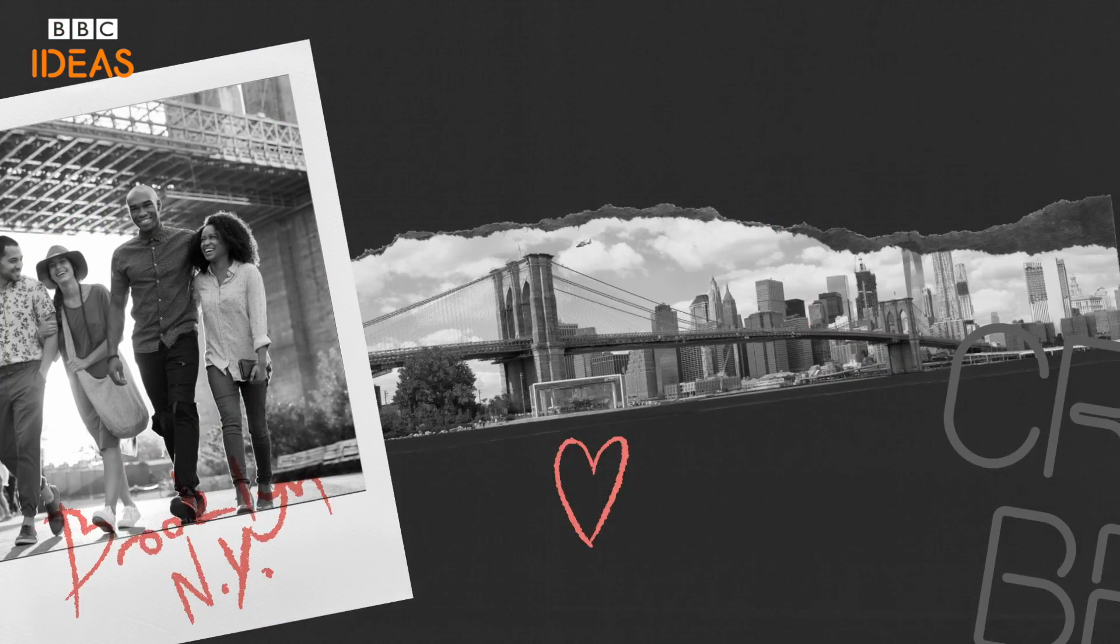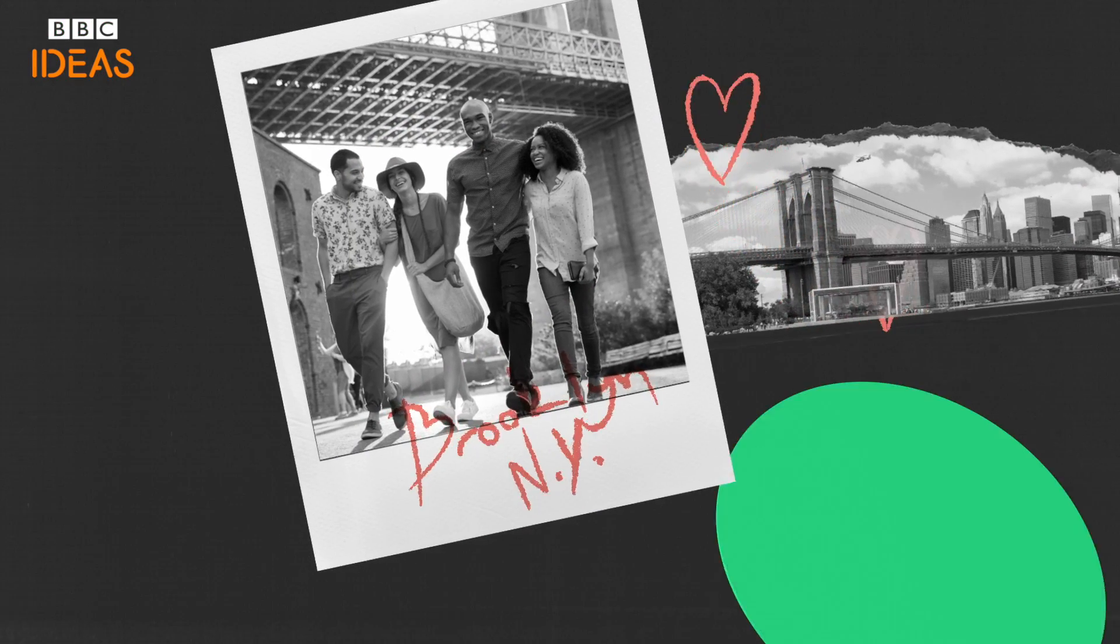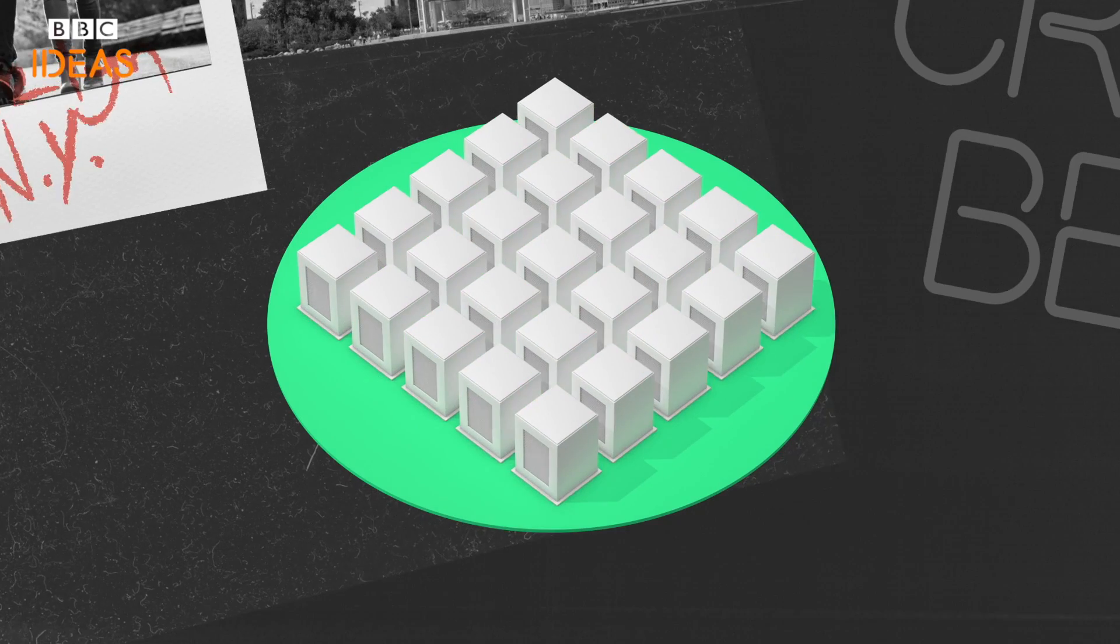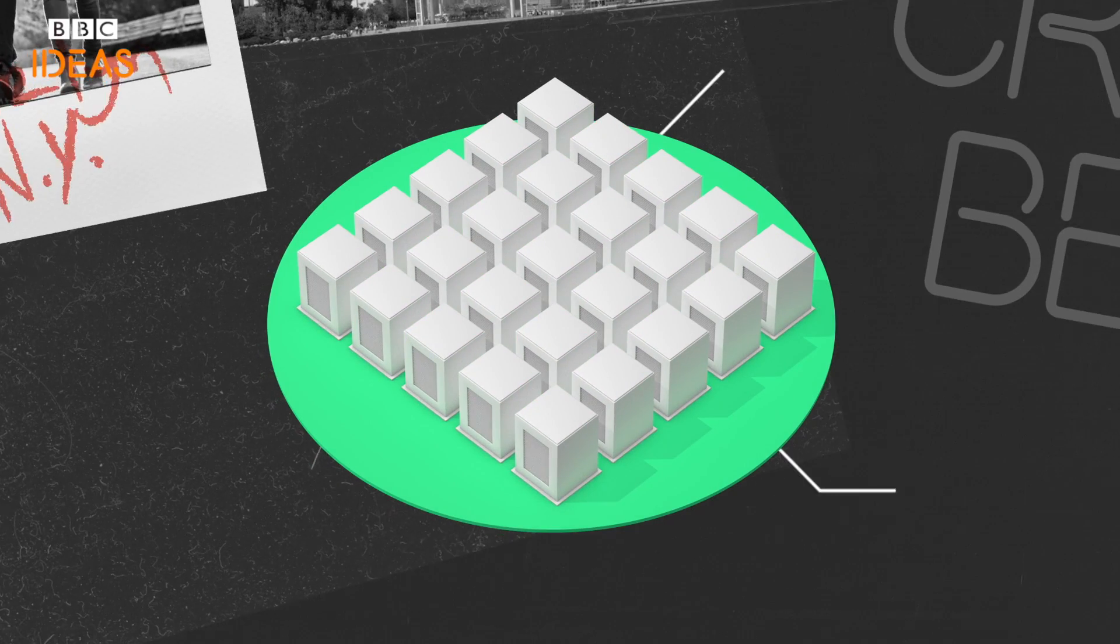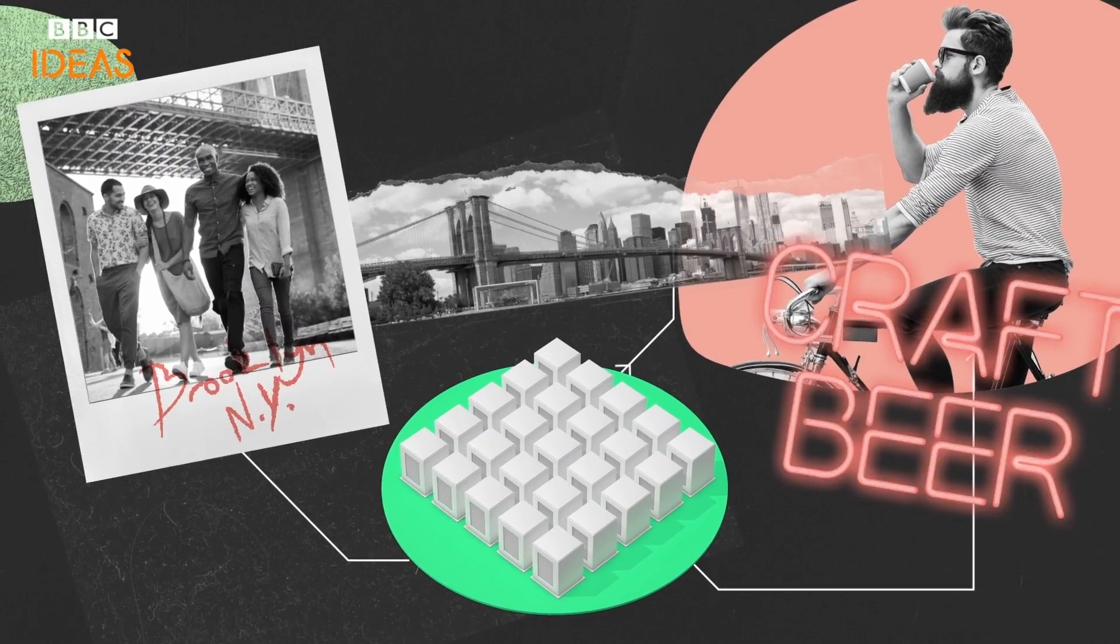In Brooklyn New York a neighborhood microgrid harvests, stores and distributes clean energy through a network of lithium-ion batteries, solar panels, converters and smart meters.